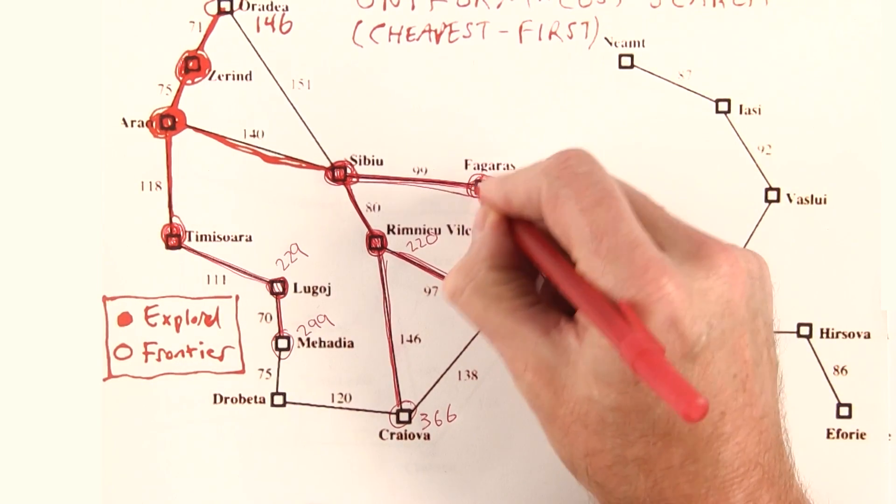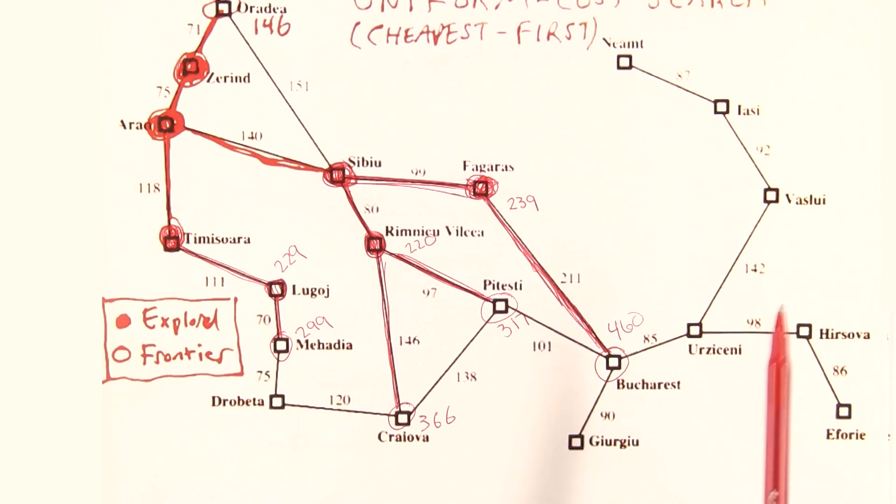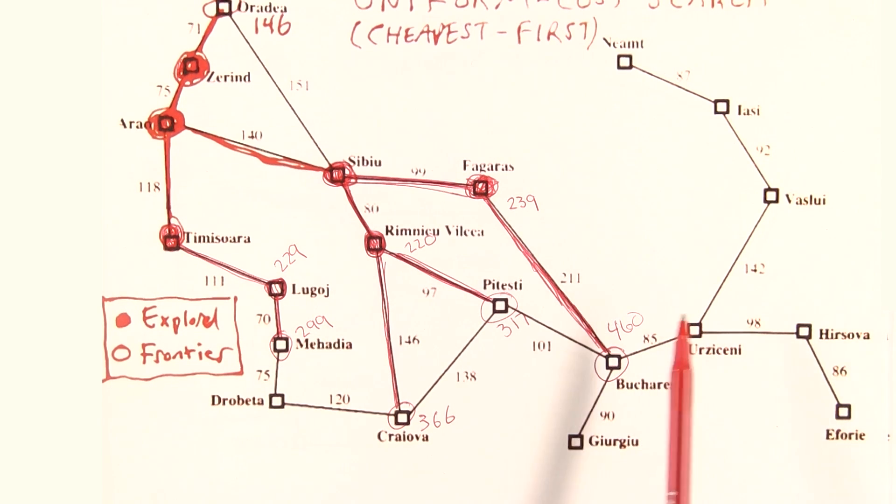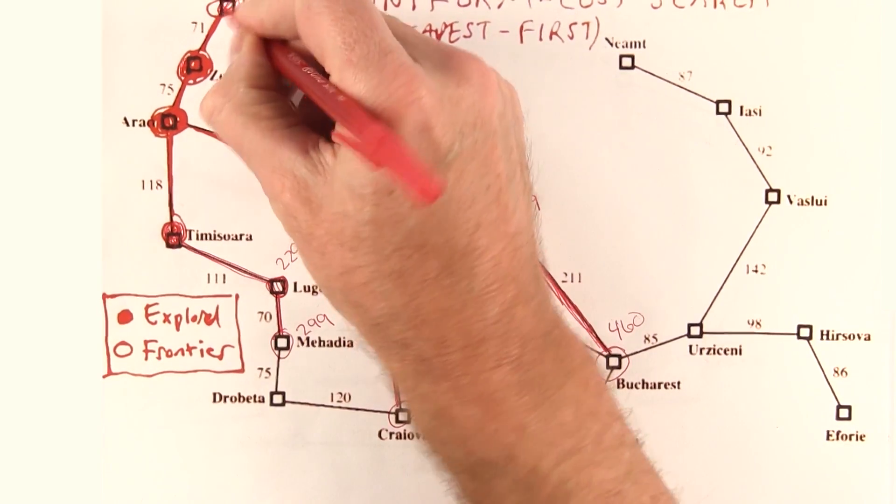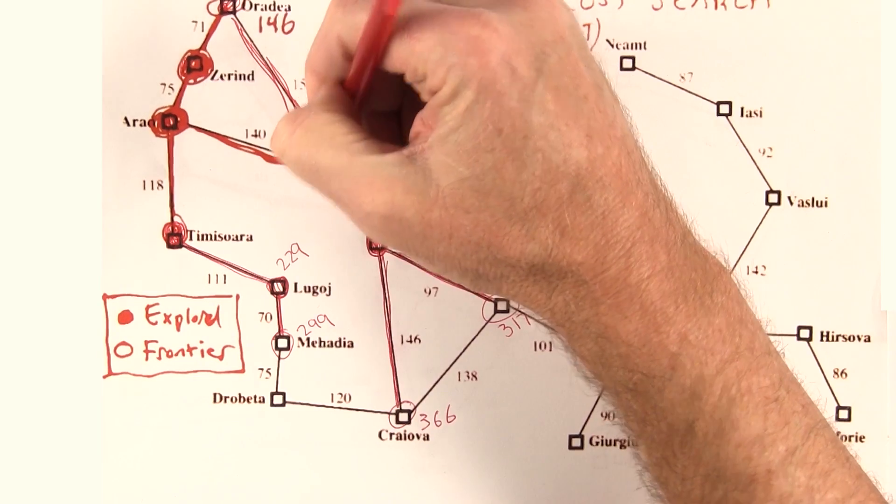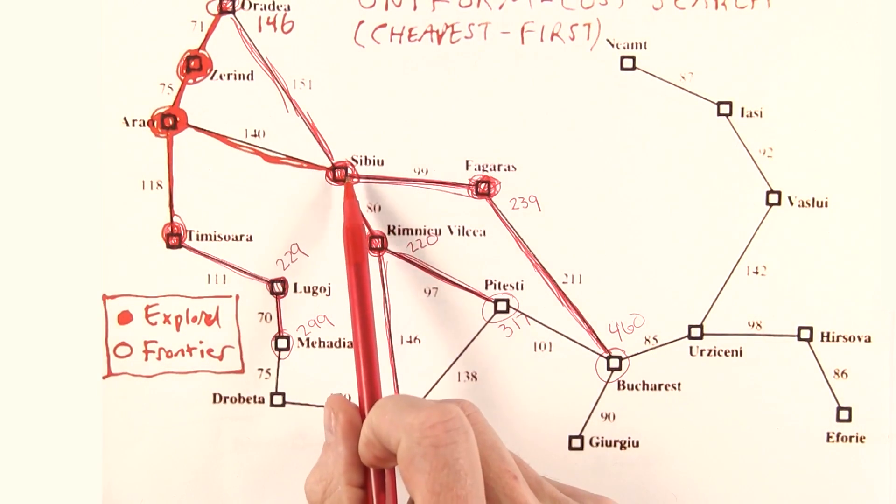Let's see, I forgot to say Fagoras is explored. Let's continue. Let's take the cheapest path on the frontier and expand that. The cheapest path is this 146. We'll expand that, get another path into Sibiu. That's a worse path than we had before, so we'll drop it.